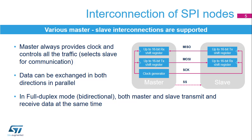The master can select the slave it wants to communicate with through the optional slave select or NSS signal. Data stored in the dedicated shift registers can be exchanged synchronously between the master and slave through the MOSI, master output, slave input, and the MISO, master input, slave output data lines.